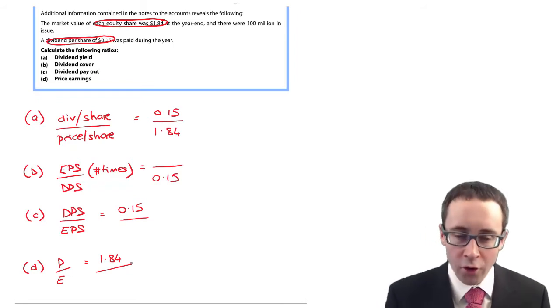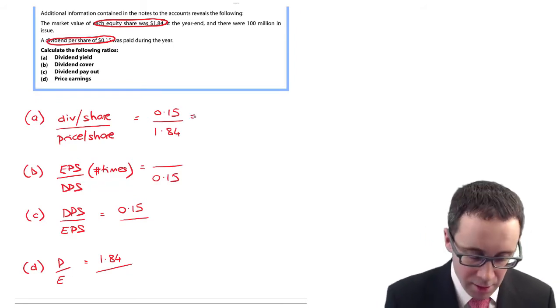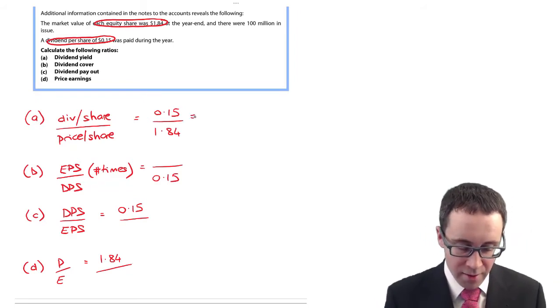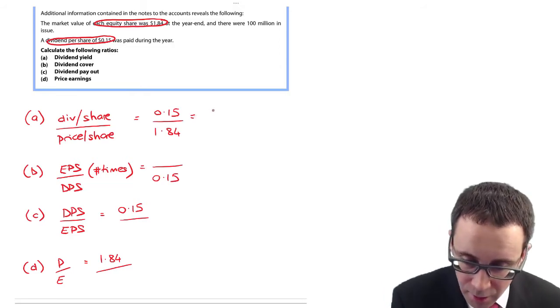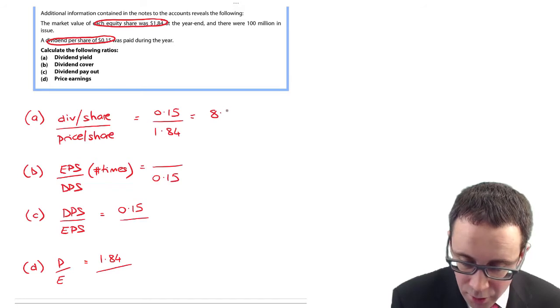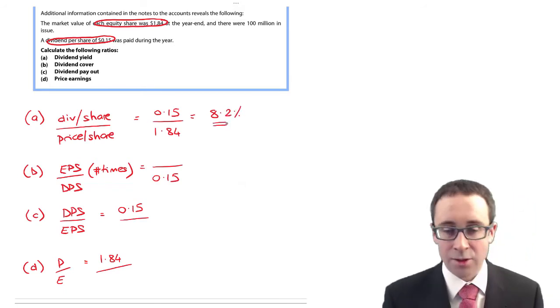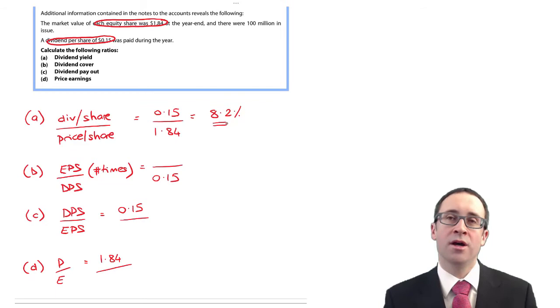Well, I've got one formula there at the top, 0.15 divided by 1.84, multiplied by 100. Does that work out? Is it 8.2%? So your dividend yield, the return that your dividend is generating is 8.2%.